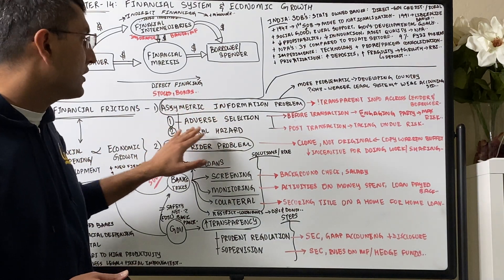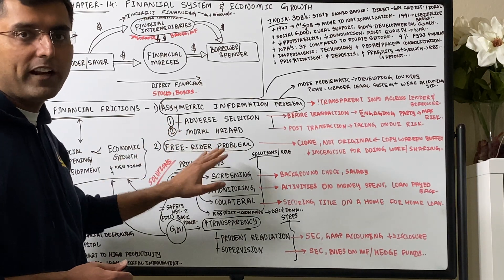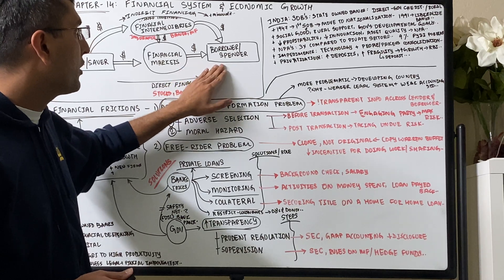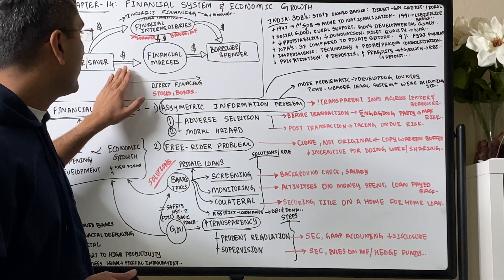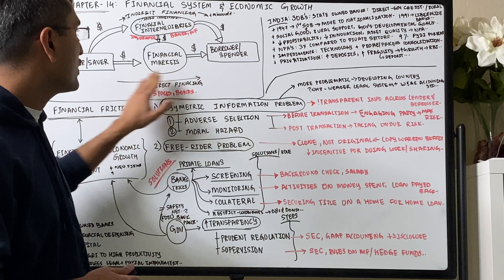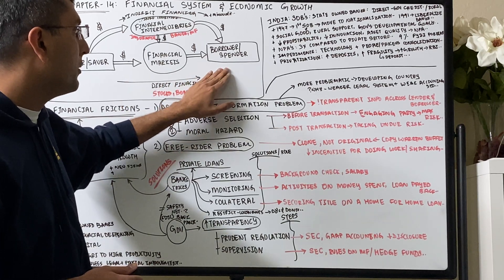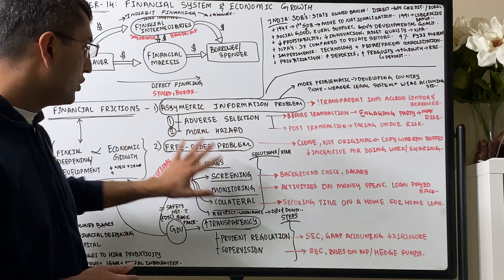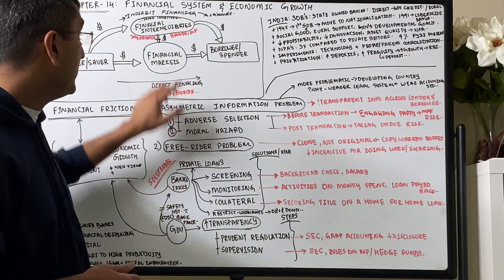Because of these two problems, we are having financial frictions. If there's adverse selection, moral hazard risk, free rider problem, then there'll be friction. There'll not be enough good material available about the borrower. There'll not be enough risk appetite being shared across the credit worthiness of the borrower. So these are the big problems. What are the solutions?